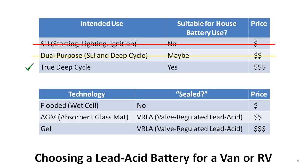Starting batteries aren't really suitable for use as house batteries, and while certain dual-purpose batteries might be used, I'm going to recommend against them because of the extra care required to keep from ruining them very quickly. So that leaves true deep-cycle batteries as the only remaining choice in the top table, reducing our choices to one of three technologies listed in the bottom table.